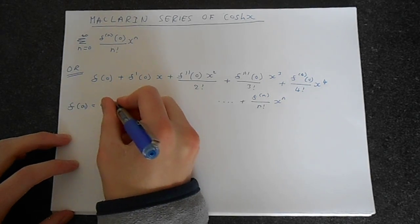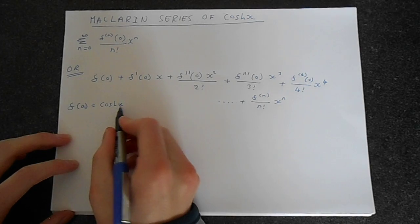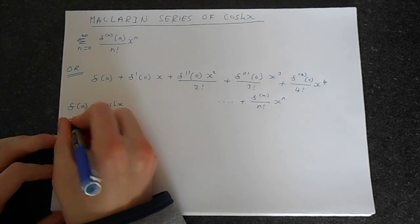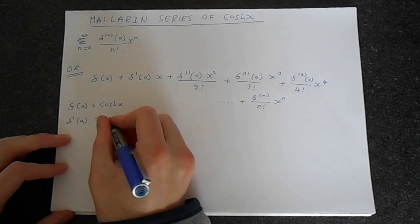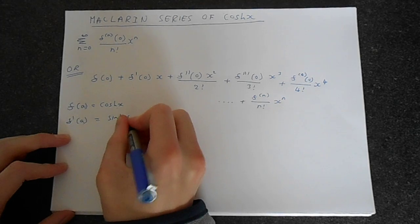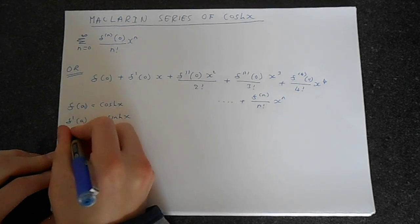So the function starts as the hyperbolic cosine of x, then we take the derivative, we get sinh x, and then take the derivative again, and it goes back to cosh x.